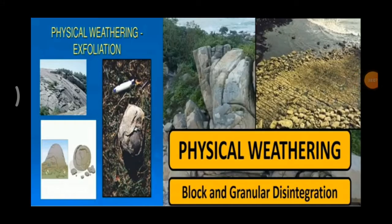Exfoliation: the alternate heating and cooling on rounded rock surfaces leads to the peeling of rocks layer by layer, like an onion. Just as we peel the skin of an onion or a potato, rocks peel down by heating and cooling. This is called exfoliation.